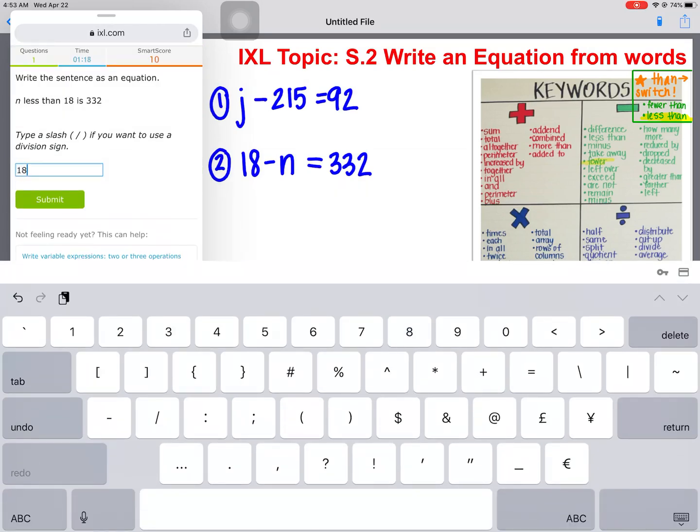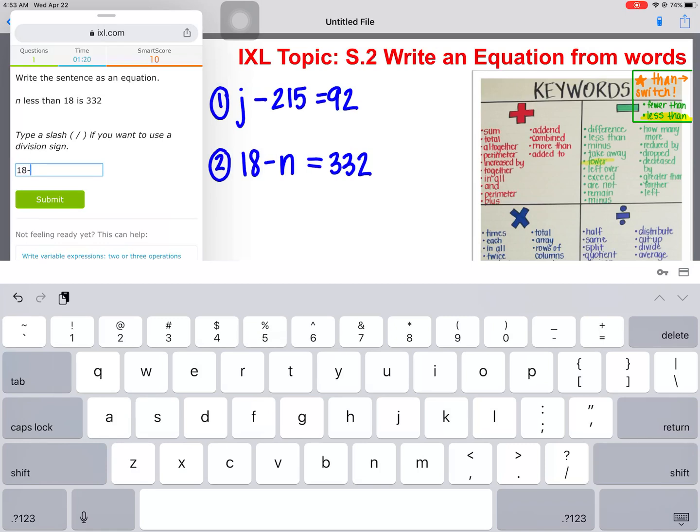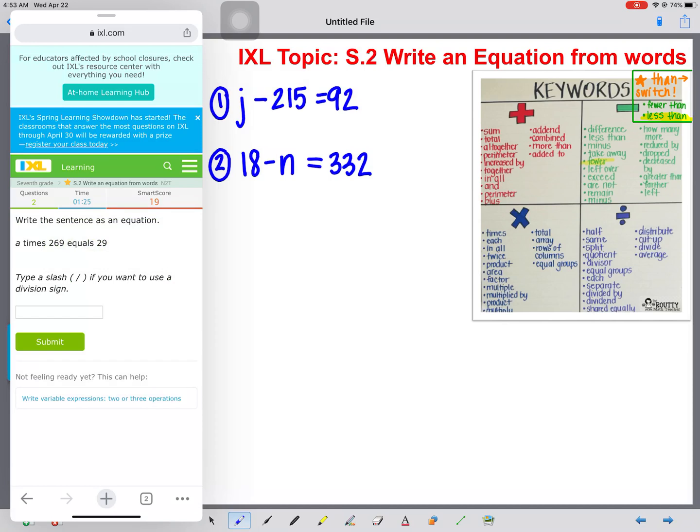I'm going to type that in here, 18 minus N equals 332. Woohoo! Okay, number three.